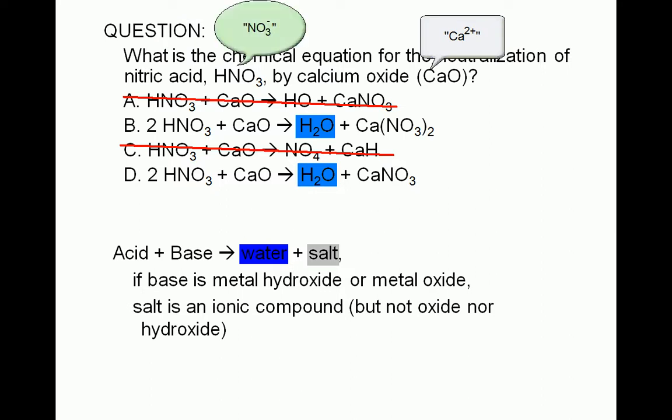Therefore, the salt is calcium nitrate. Since naturally occurring calcium ions have a plus 2 charge, and nitrate ions have a charge of negative 1, the formula of the salt is Ca(NO3)2.